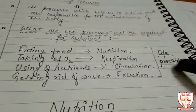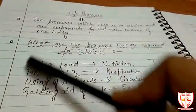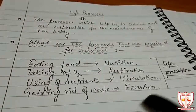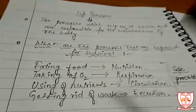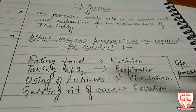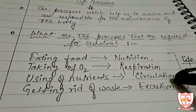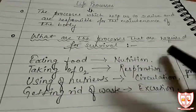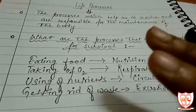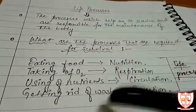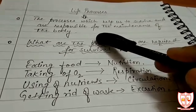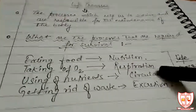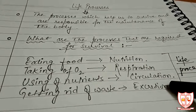All these processes are altogether known as the life processes. So in this chapter you are basically going to study about these four processes: nutrition, respiration, circulation, and excretion. We know that on our planet there are basically two types of living organisms, broadly divided as plants and animals. Hence in this chapter we are going to study about the life processes that occur in different plants and animals, and we will study about all of them in detail one by one.